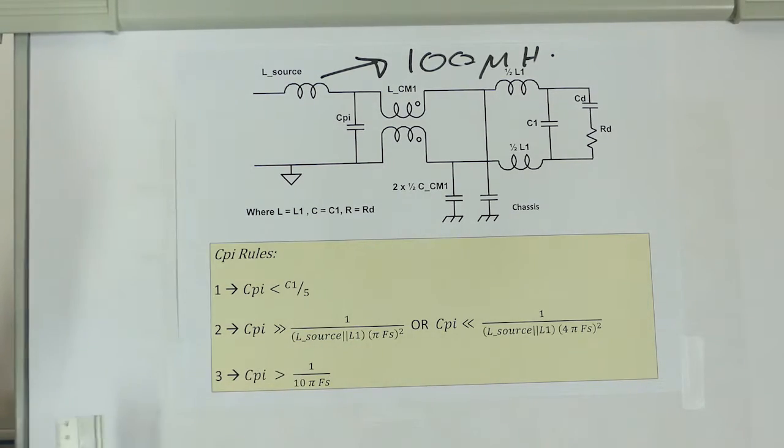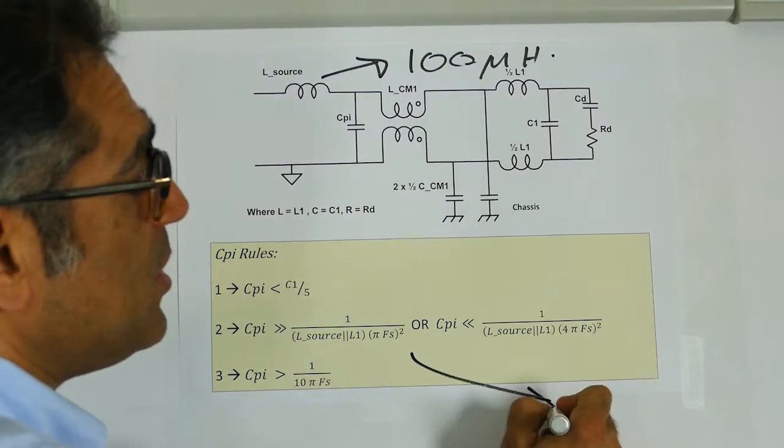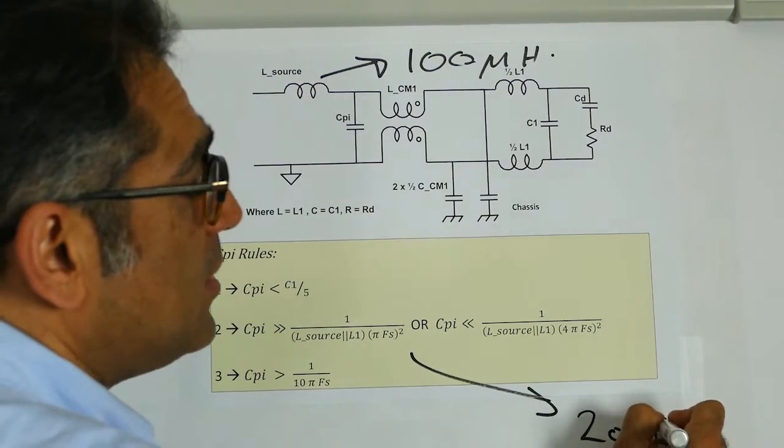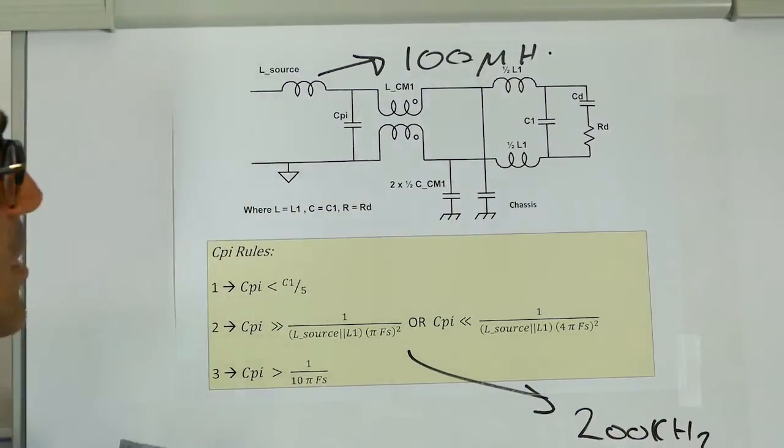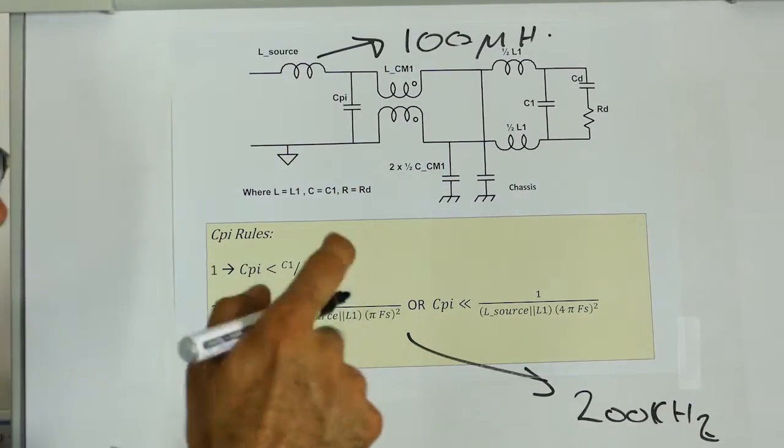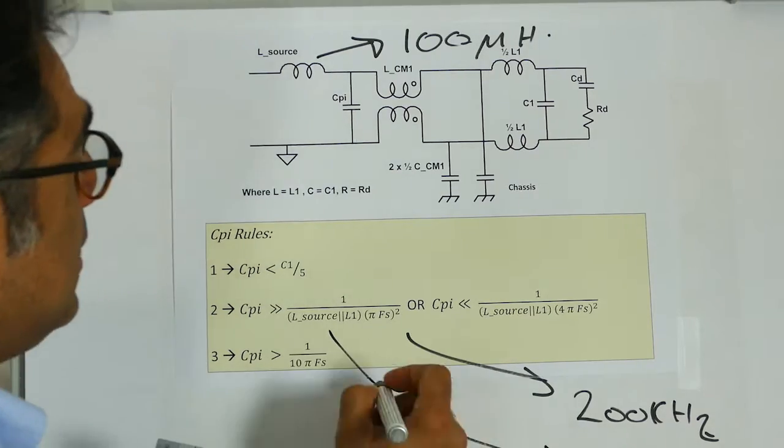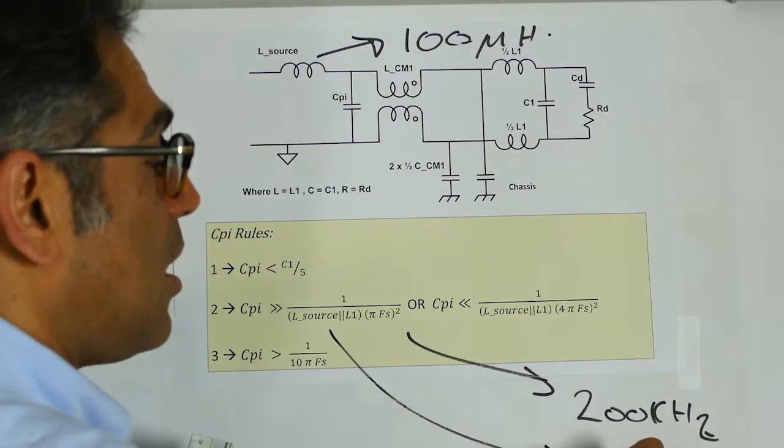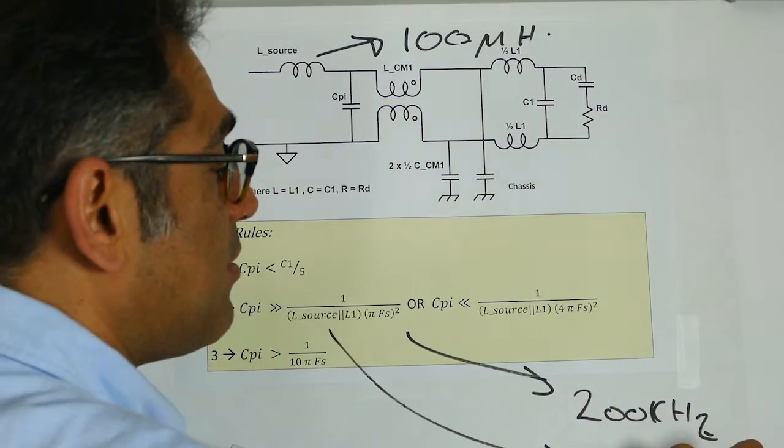In our case, for example, switching frequency Fs is going to be 200 kilohertz. I am using a CISPR 16 LISN and that is 2 times 50 microhenries, so L source is equal to 100 microhenries.